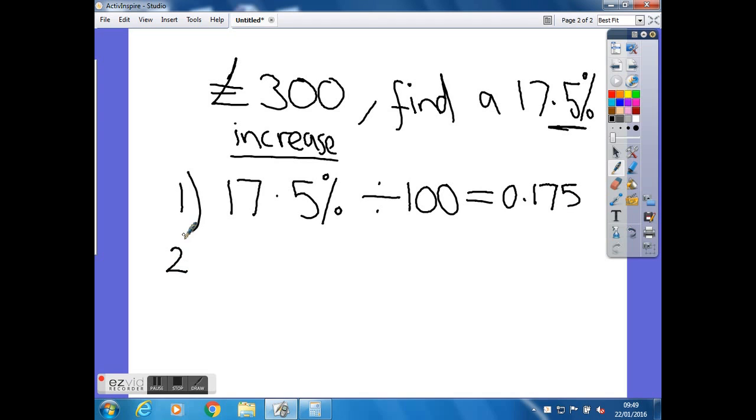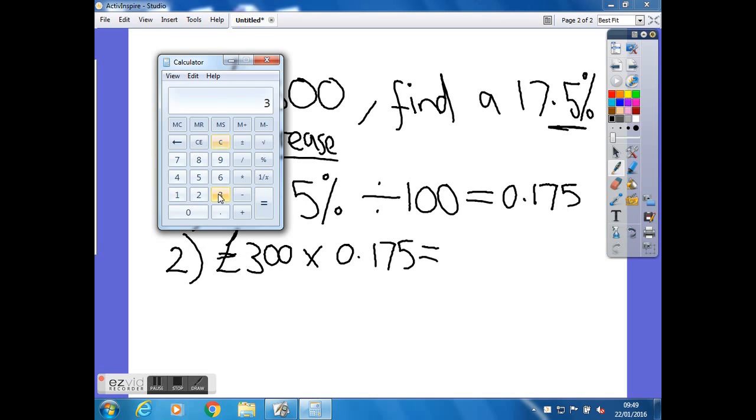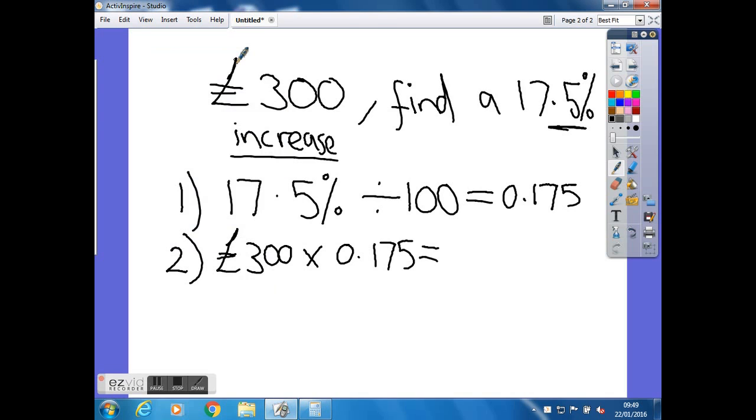And the second stage was to times our original value, the £300, by that decimal that we just found, 0.175. We'll go back to the calculator. So 300 times 0.175, so that gives you £52.50. Again that is our 17.5% of the original £300.